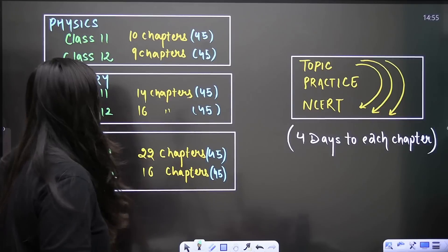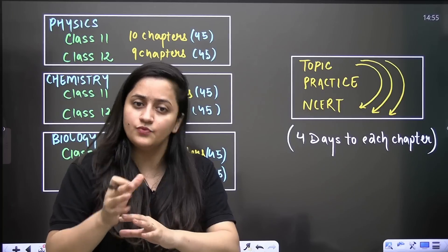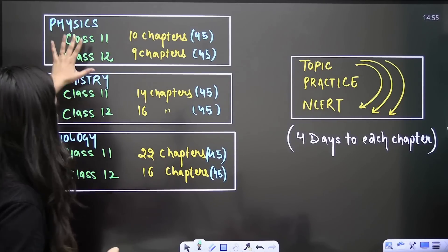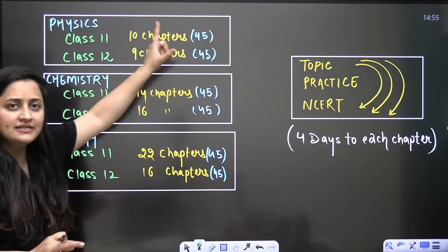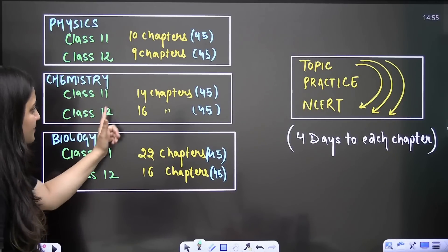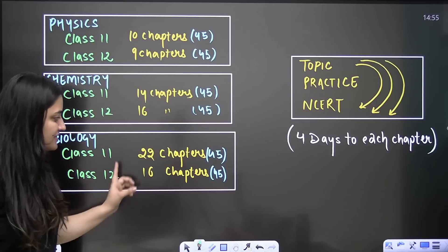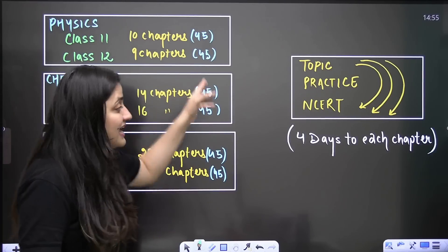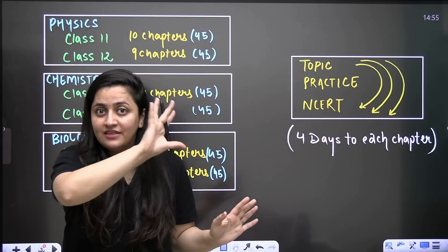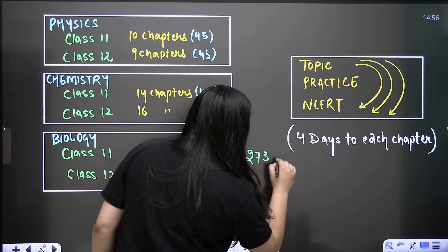Now when we talk about the syllabus, have a look. If you feel like there is some mistake in this video, let me know in the comment section. I will rectify that, but I don't think there is any mistake. Look at the physics syllabus, chemistry syllabus and biology. Physics class 11: 10 chapters. Class 12: 9 chapters. Chemistry: 14 chapters class 11, 16 chapters class 12. Biology class 11: 22 chapters. Class 12: 16 chapters. And it is as per old NCERT because there is no syllabus deduction yet, no official announcement.